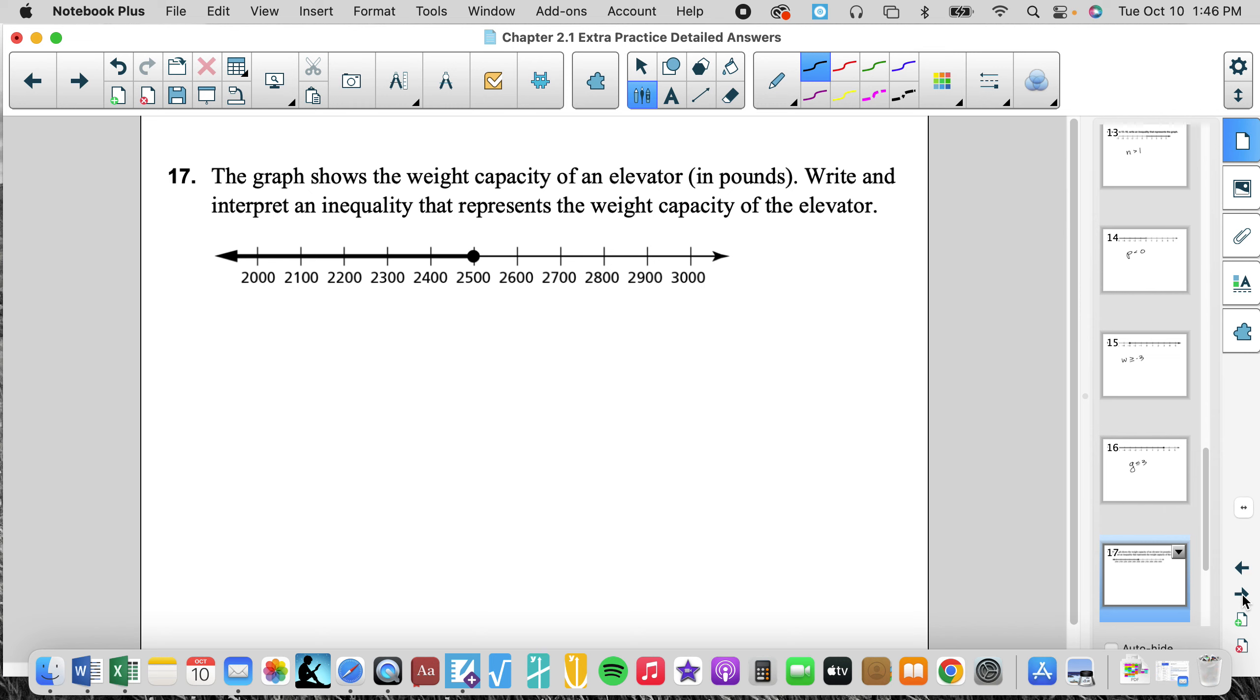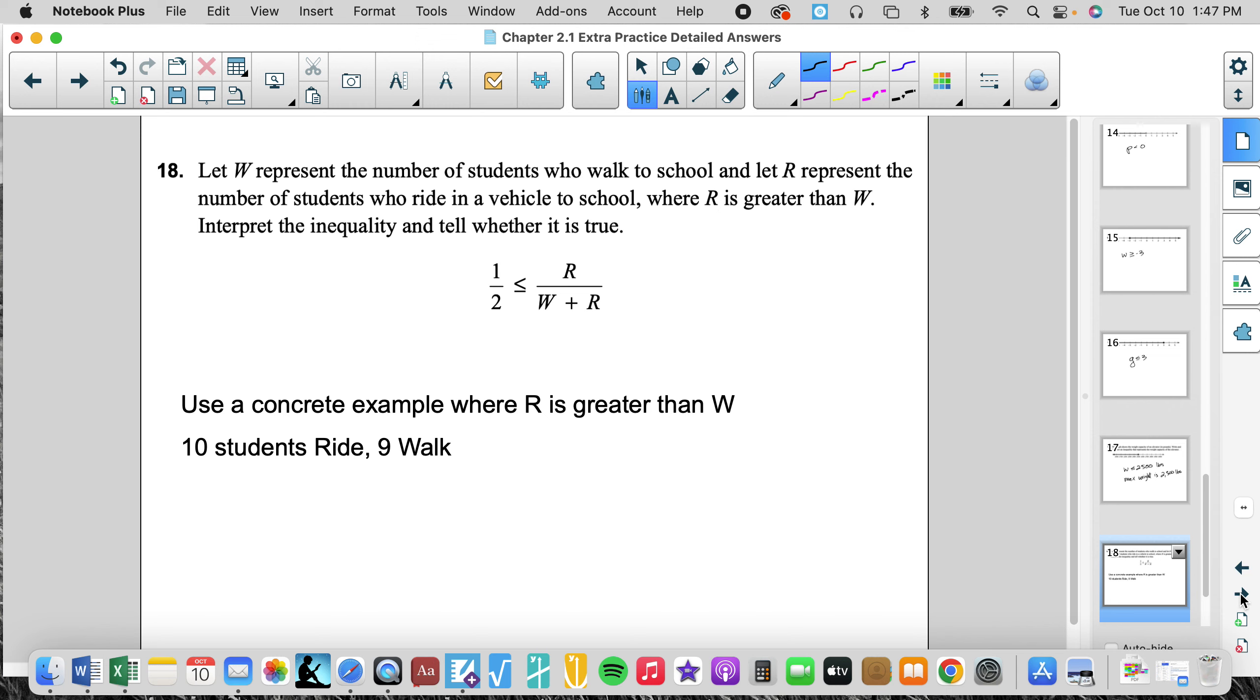The graph shows the weight capacity of an elevator in pounds. Write and interpret an inequality that represents the weight capacity of the elevator. So we know that the weight must be less than or equal to 2,500 pounds. It can be equal to 2,500, but it needs to be less than that. The maximum weight, max weight is 2,500 pounds. Anything less than that is okay. Anything more than that would be no bueno, not okay.